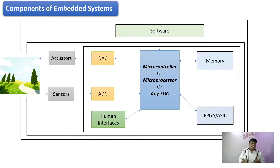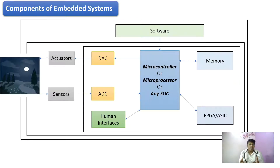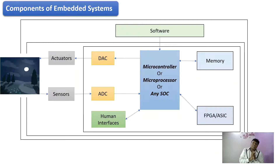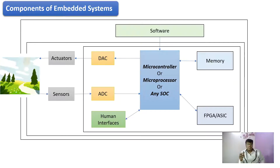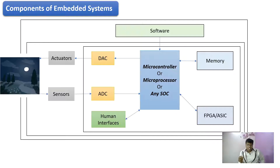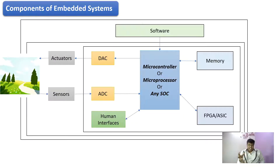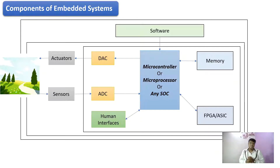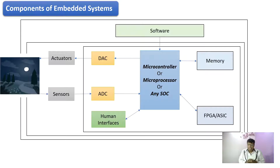Now let's see the basic components involved in an embedded system. One such component is your microcontroller unit, microprocessor unit, or any SOC-based processor. Since all signals in nature are analog, these analog signals are captured by sensors and converted to digital form via ADC — analog to digital converters. These ADCs could be successive approximation ADCs, flash 10-bit ADCs, or any other ADC types.